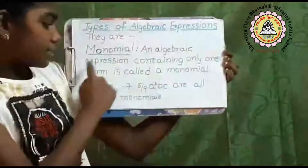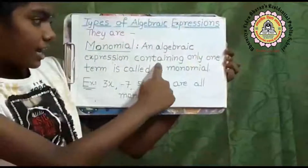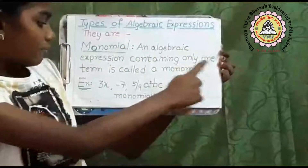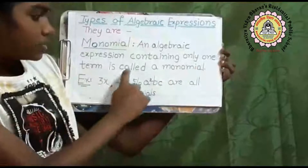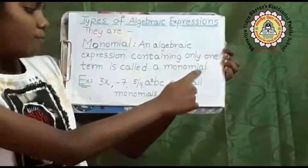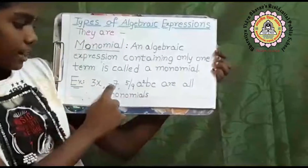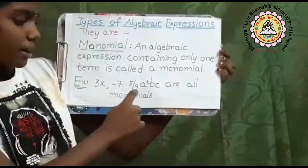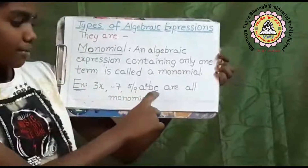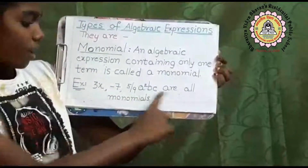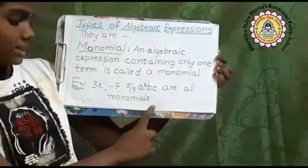Monomial: an algebraic expression containing only one term is called a monomial. Examples are: 3x minus 7, 5 by 9, a square, b, c are all monomials.